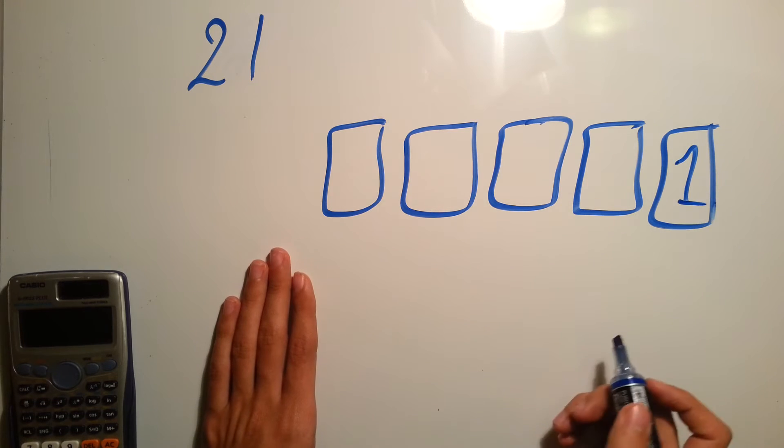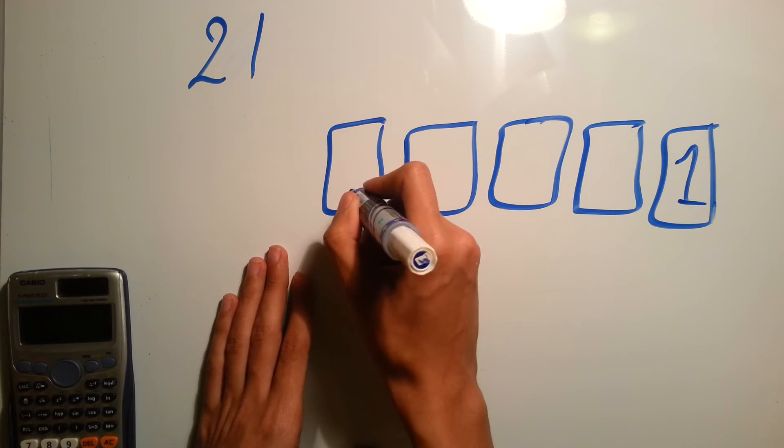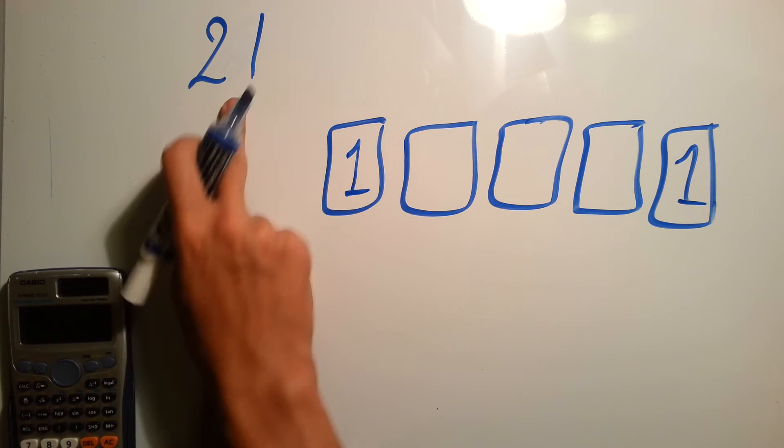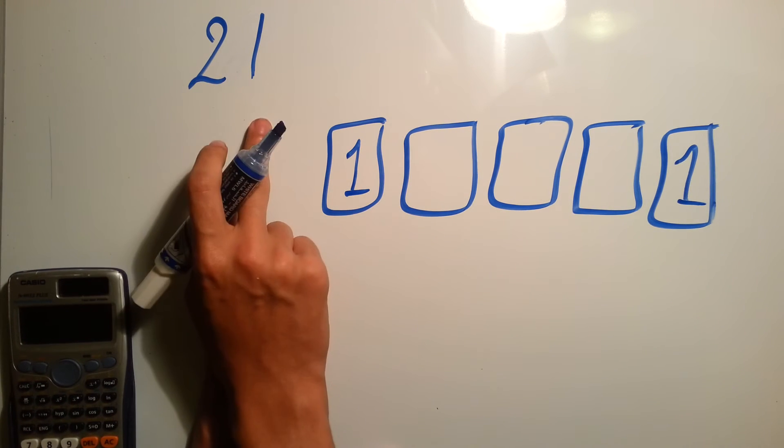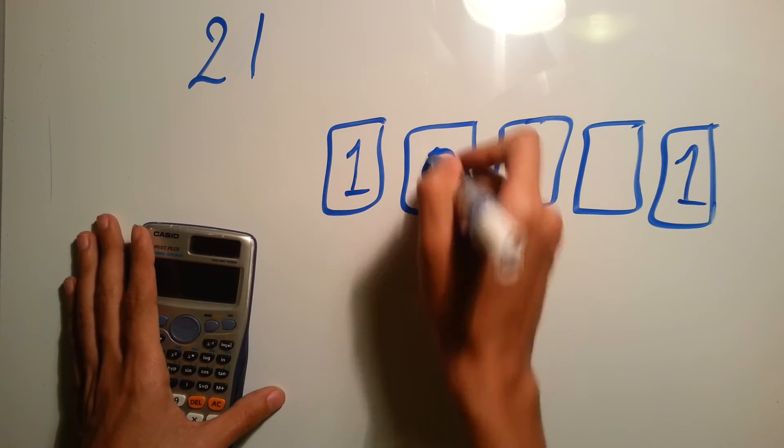It's an odd number, so definitely this one is going to be 1. And it's 21, which is larger than 16, then this one will be 1.